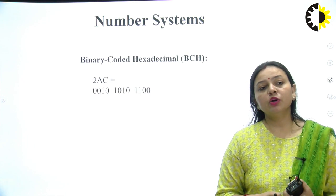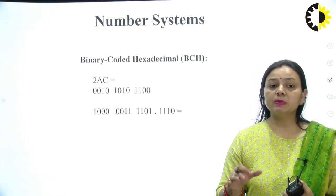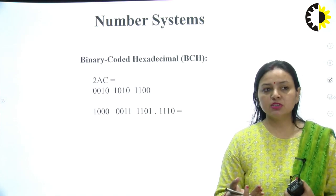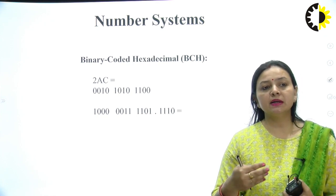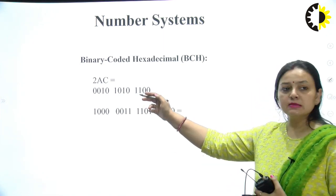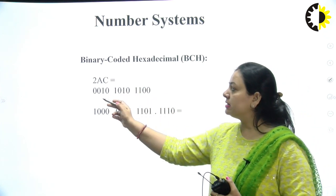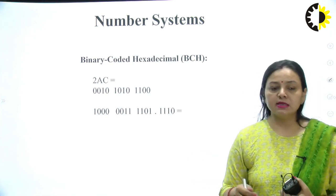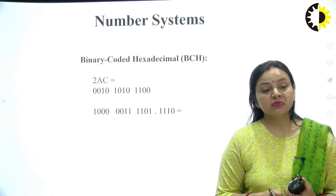BCD — binary coded decimal — is a number system commonly used in microprocessors, where each digit is represented in 4 bits. For example, 2ACH: C means 12 = 1100, A means 10 = 1010, 2 = 0010. So every digit is represented in 4 bits — this is BCD, the commonly used number system format for microprocessors.